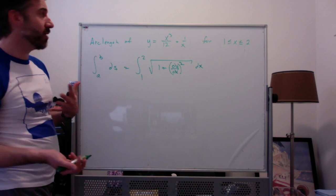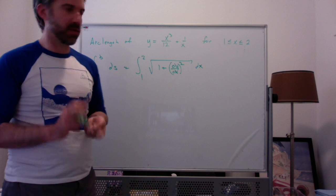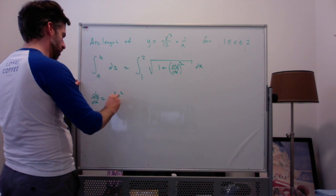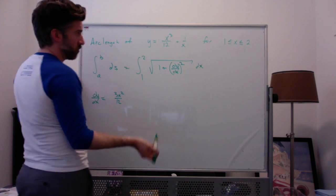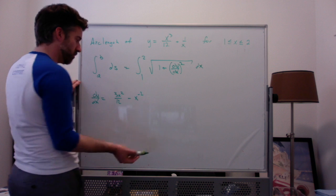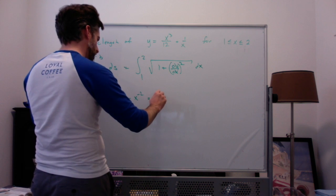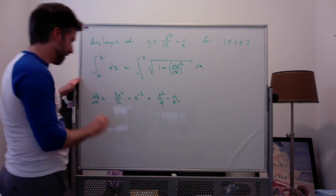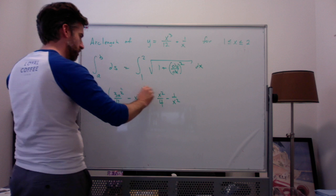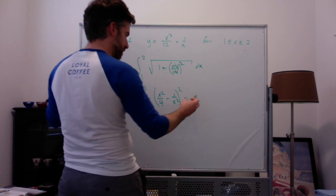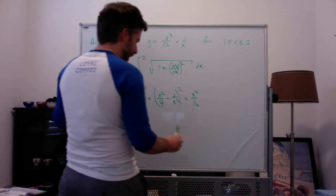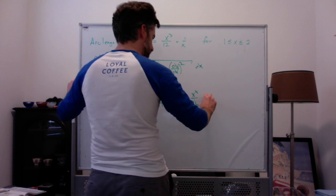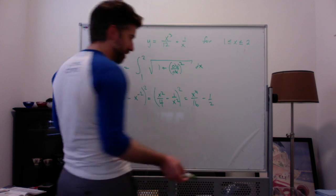The way this should typically work out is that the derivative squared should have a negative one-half in the middle. If I look at dy/dx here, the derivative of x cubed over 12 is 3x squared over 12, and the derivative of 1 over x, which is x to the negative 1, is negative x to the negative 2. This simplifies to x squared over 4 minus 1 over x squared. If I square this out, I get x to the 4th over 16. The cross term: x squared over 4 times negative 1 over x squared is negative 1/4, and that appears twice, giving negative 1/2, which is exactly what I'm expecting.